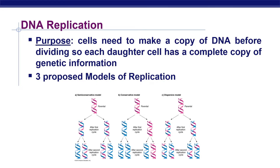DNA replication — literally, replication means the process of duplication. In molecular biology, DNA replication is the primary stage of inheritance. The central dogma explains how DNA makes its own copies through DNA replication, which then codes for RNA in transcription, and further RNA codes for proteins by translation. The main purpose of DNA replication is that the cell needs to make a copy of DNA before dividing, so each daughter cell has a complete copy of the genetic material.